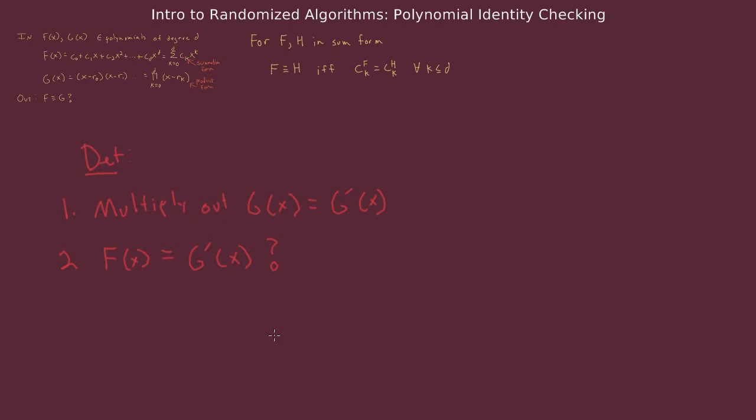So let's talk about the computational cost of this algorithm. The second step can be done in order d, it simply requires d coefficient equivalency checks. So that can be done in order d time. So let's analyze the first step. What's the computational cost of transforming g in product form to g in summation form?